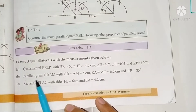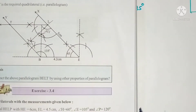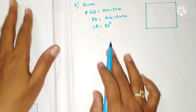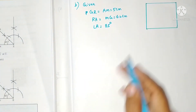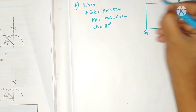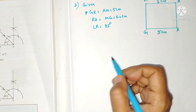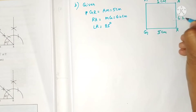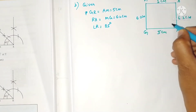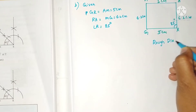Second problem: Construct parallelogram GRAM with GR, AM, and RA = MG and angle R = 85 degrees. In a parallelogram, opposite sides are equal, so GR = AM and RA = MG. The given measurements are: GR = 5 centimeters, AM = 5 centimeters, RA = 6.2 centimeters, and angle R = 85 degrees. Draw the rough diagram.